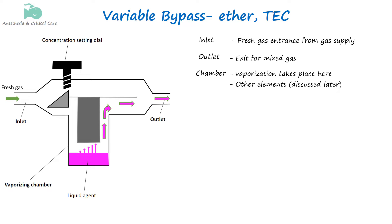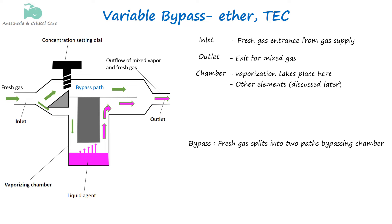The reason it is called bypass is because the vaporizer has a bypass pathway that allows a portion of the fresh gas flow to bypass the vaporizing chamber, while another portion passes through the chamber to become saturated with anesthetic vapor. It's variable because the dial controls the concentration by adjusting the ratio of gas through the chamber versus the gas that bypasses it.